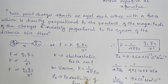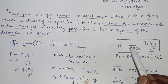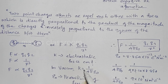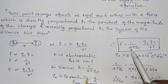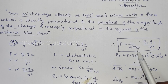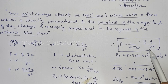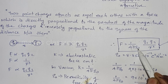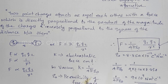Epsilon-zero is the permittivity of free space. The constant k is equal to 1 divided by 4π·epsilon-zero. So the equation becomes F is equal to 1 by 4π·epsilon-zero times q1·q2 divided by r².